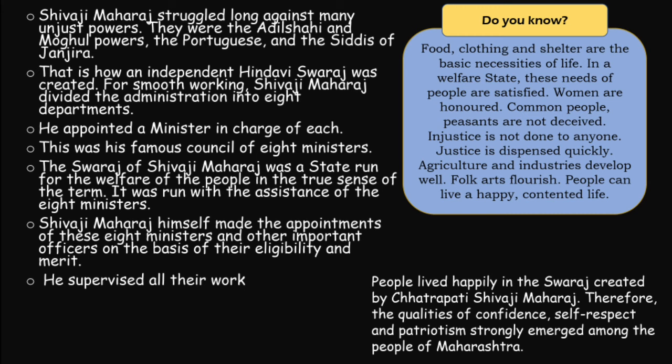The Swaraj of Shivaji Maharaj was state-run for the welfare of the people in the true sense of the term. It was run with the assistance of the eight ministers. Shivaji Maharaj himself made the appointments of these eight ministers and other officers on the basis of eligibility and merit, and he supervised all their work.